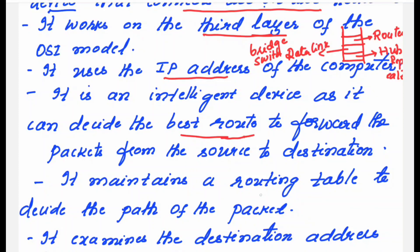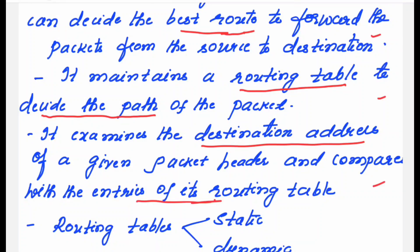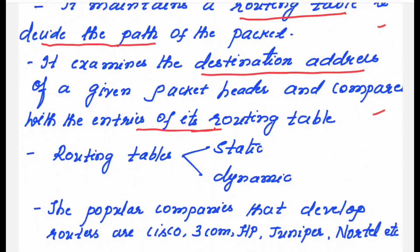How does it do that? It maintains a routing table, and with the help of the routing table, it will decide the path of the packet. It also checks every time the destination address of the packet and compares it with the entries of the routing table.